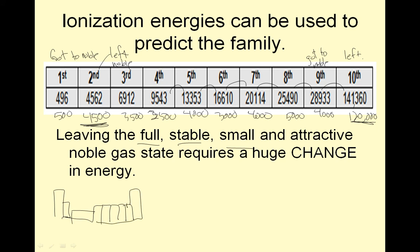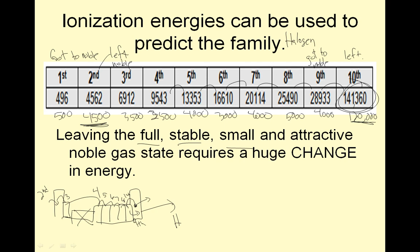The first jump got me to the noble gas state, and the second jump left it — so this element is a halogen. For another example, the ninth ionization gets to noble gas, and the tenth is the huge jump. We ignore the D block. When you leave the noble gas state it requires a huge amount of energy, and you count backwards to determine the family.